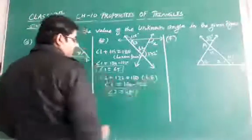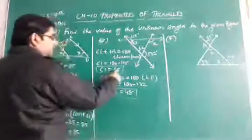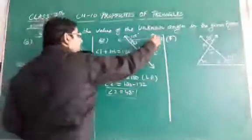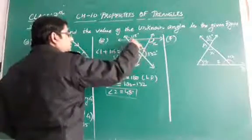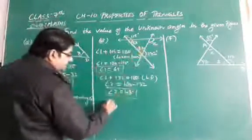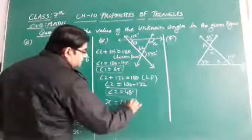We have also linear pair. In short, I write LP. Now, angle 1 is 30, angle 2 is 48. You have to calculate this angle x. Now, this angle x is an exterior angle for both these two opposite interior angles. So, x is equal to angle 1 plus angle 2.